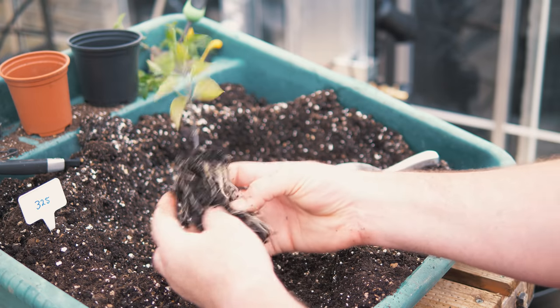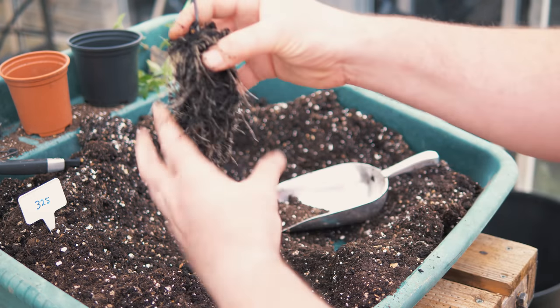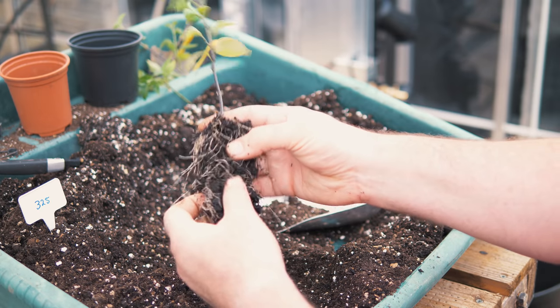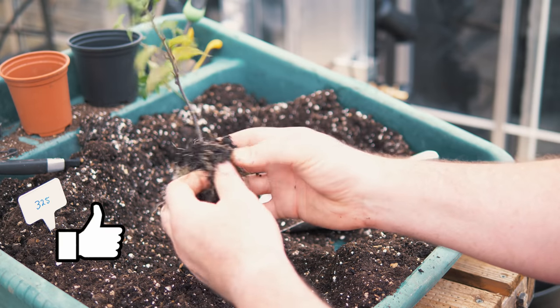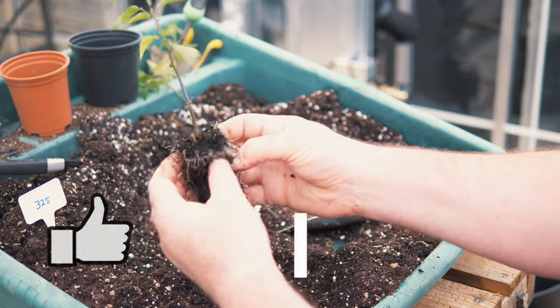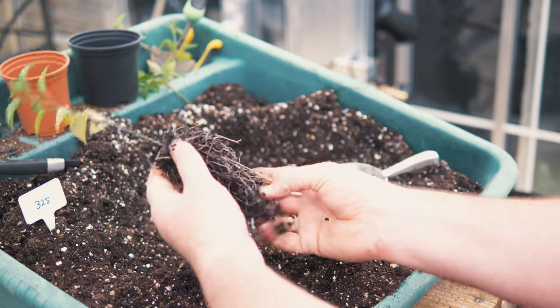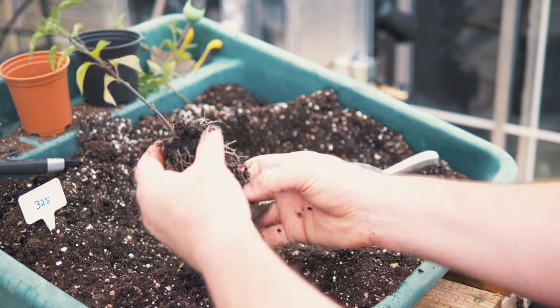So all you need to do is just tease out the roots a little bit, because obviously this is quite long and if I didn't tease it out, it wouldn't be able to go as low as I'd like it. So just gently, gently, don't break the roots or try your best not to break the roots.